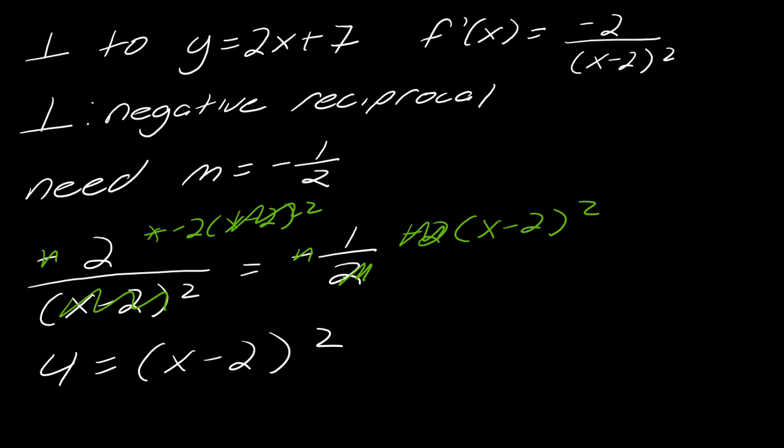This is in the format where we can use the square root property. So to solve this, I take the square root of each side. So I get x minus 2 equals plus or minus the square root of 4. Just a reminder, when you take the square root, you have to have this plus or minus in front. That's how the square root property works.